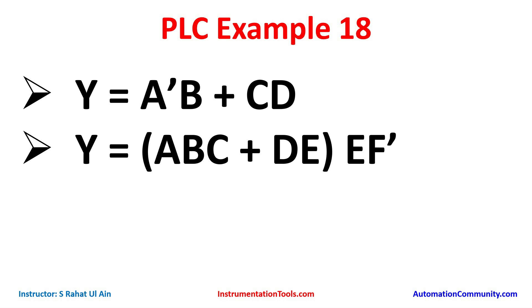The second example is Y is equal to ABC plus DE into EF-not. So we will start with the first one: Y is equal to A-not B plus CD. For input A we will use a normally closed contact.